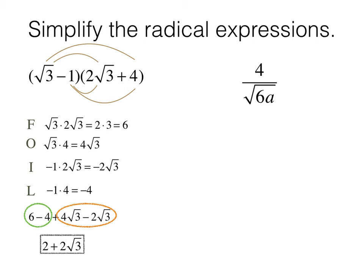Okay, the next example, we can see there's a square root in the denominator, which is not allowed. So to rationalize this, we're going to multiply by a disguised form of the number 1. We'll multiply by square root of 6a over square root of 6a.